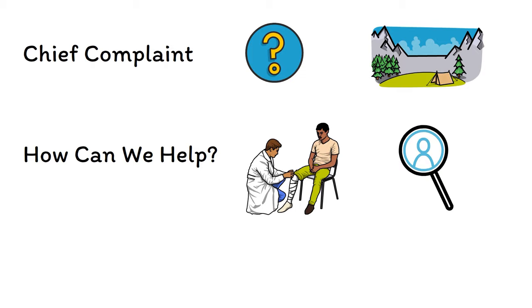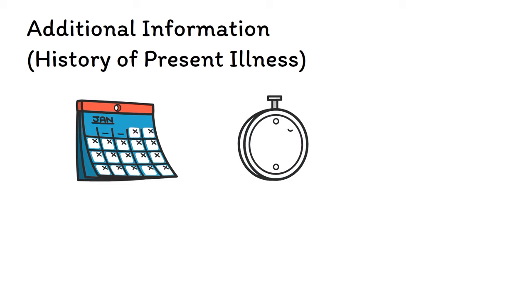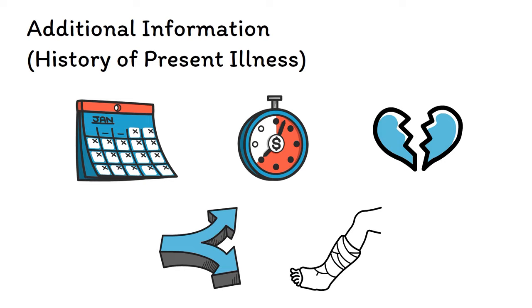Once you have a sense of the patient's concerns, gather some additional information on the problem by taking a History of Present Illness, or HPI. This will help to fill in the gaps of the patient's chief complaint, including when it began, how long it's been going on, what it feels like, if anything makes it better or worse, and how distressing or disabling it is.